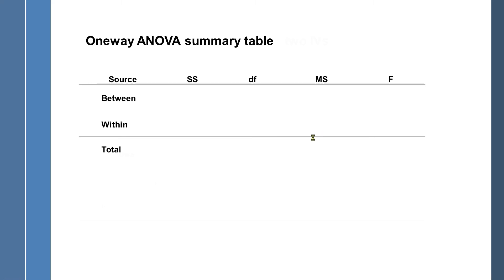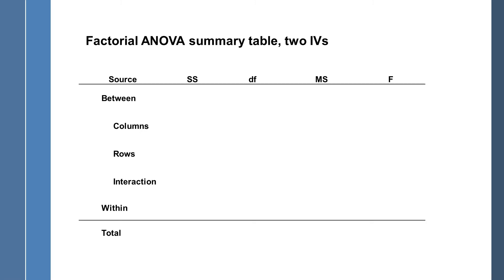Fill in the degrees of freedom, get the mean square, and the F-test. The factorial ANOVA summary table is more complicated because it has columns, rows, and interaction effects. I've indented those rows to represent the fact that columns, rows, and interaction all came out of the between groups. By the additive principle, if you know the between-groups sum of squares and have columns and rows, subtract them from between to get the interaction.